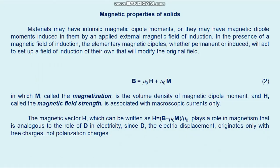Magnetic properties of solids: materials may have intrinsic magnetic dipole moments or may have magnetic dipole moments induced by an applied external magnetic field of induction. In the presence of a magnetic field, the elementary magnetic dipoles — permanent or induced — will set up a field of their own that modifies the original field. Magnetic dipole moments in atoms are a source of magnetic induction B, just as macroscopic currents are. We can write B equals μ_0·H plus μ_0·M (formula 2), where M called the magnetization is the volume density of the magnetic dipole moment, and H called the magnetic field strength is associated with macroscopic current only.